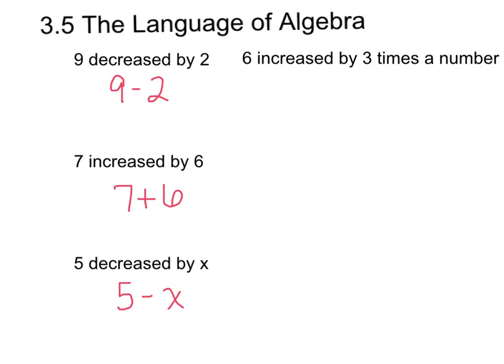Another example. Six increased by three times a number. We'd write six increased by is add three times a number. Now, here's the deal. We don't know what that number is. That number could be anything. Therefore, the number is going to be your x. Six increased by three times a number is just six plus three x.